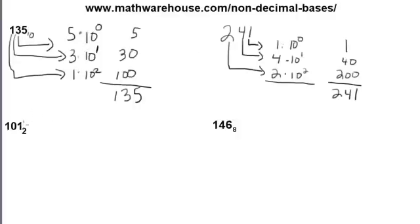So, 101 in binary is really 1 times 2 to the 0. Again, you start with the 0 power. Our base is 2, not 10 now. And this is 0 times 2 to the 1st. And this here is 1 times 2 to the 2nd.